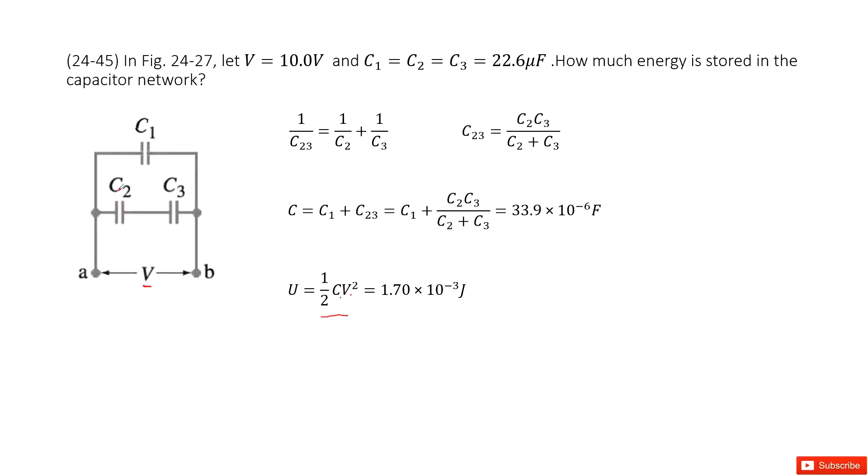We first look at capacitors C2 and C3. This is a series connection. We can consider it can be replaced by capacitor C23. You can get the capacitance using this equation and then convert it to get it there.